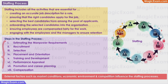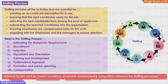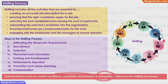There are eight important steps in the staffing process: estimating the manpower requirements, recruitment, selection, placement and orientation, training and development, performance appraisal, promotion and career planning, and compensation. We should also remember that external factors such as market conditions, economic environment, and competition influence these steps. For example, if there is a lot of competition in the market, the compensation or salaries offered will need to adjust, which in turn affects the recruitment process.